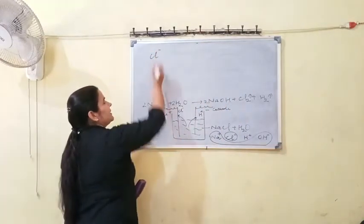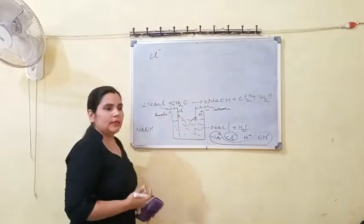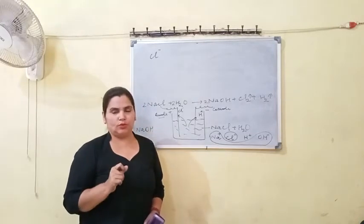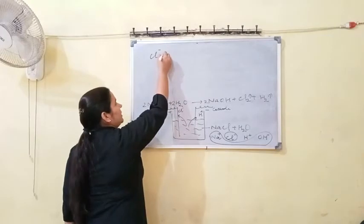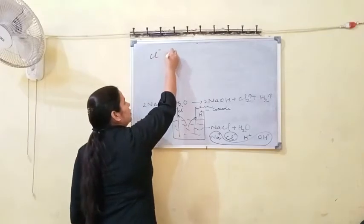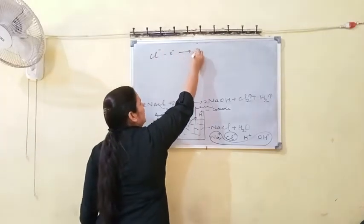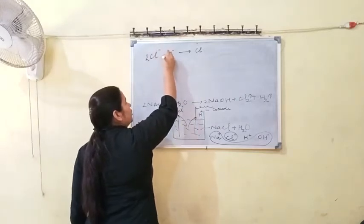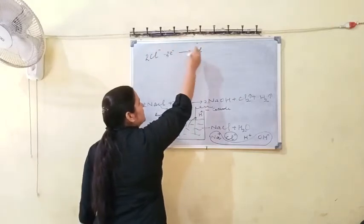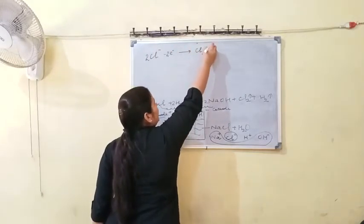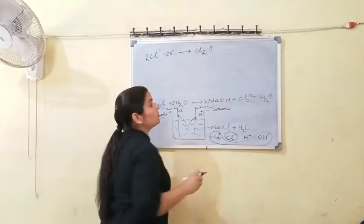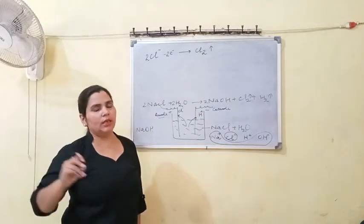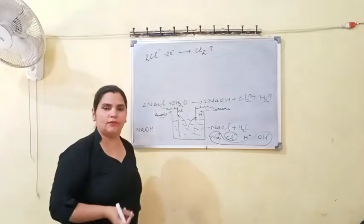At the anode: Cl⁻ means chlorine has gained one electron from outside. When we release that one electron, Cl⁻ is converted into a Cl atom. Two Cl⁻ ions release two electrons and convert into Cl₂. Cl₂ is the molecular form of chlorine, and it is always found as a gas.